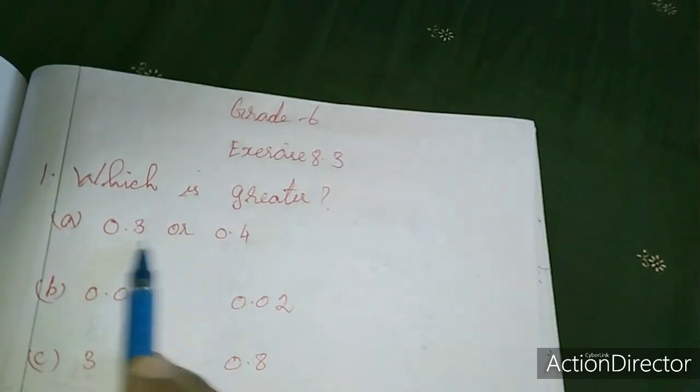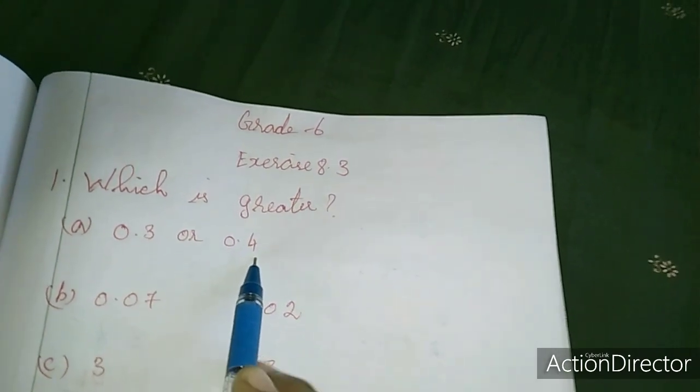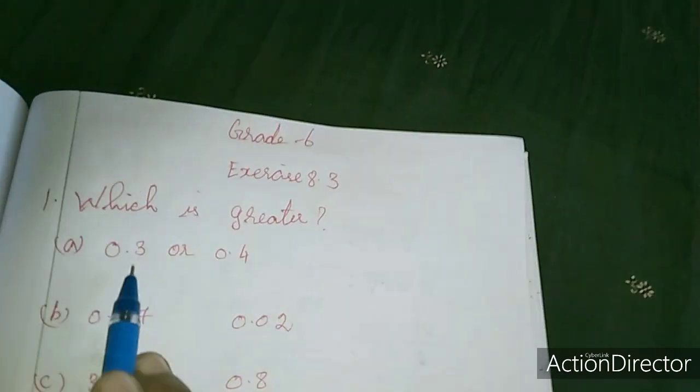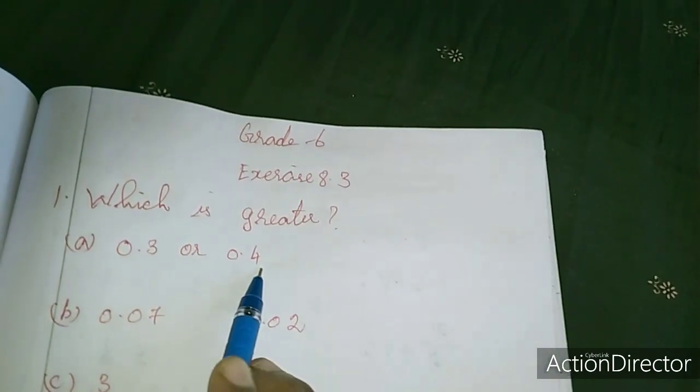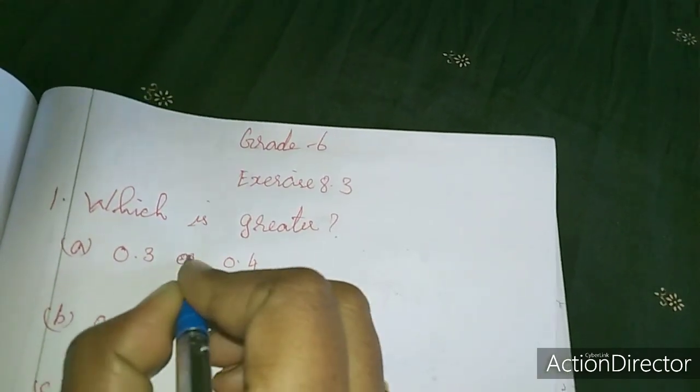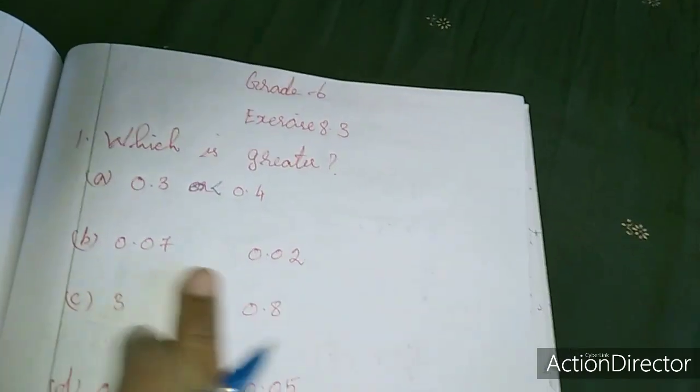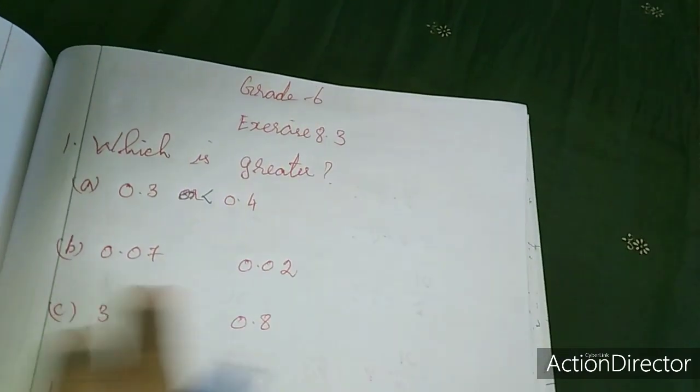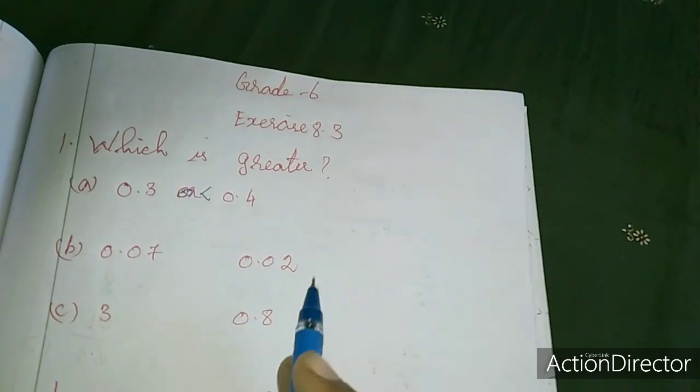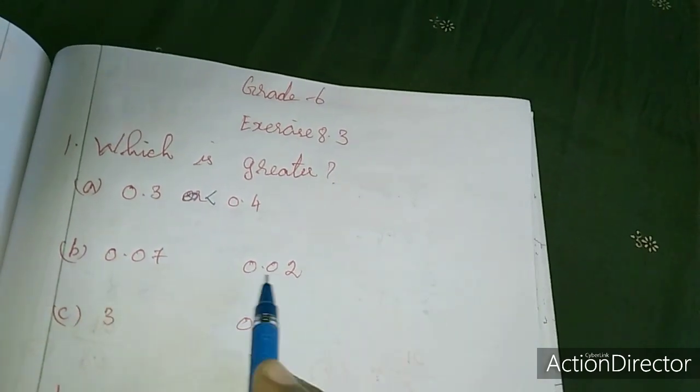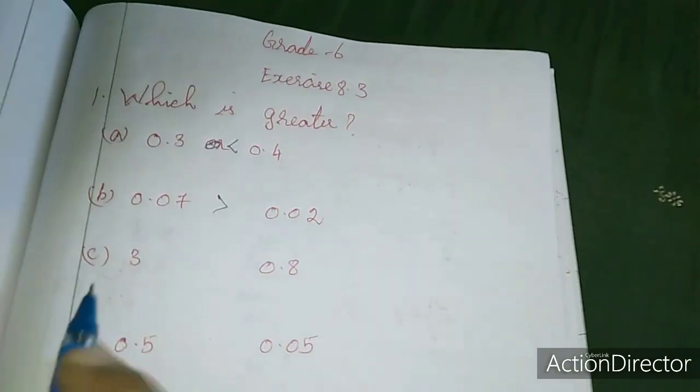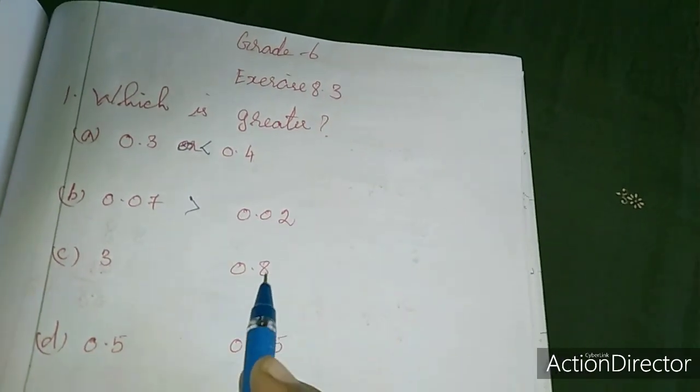So this is greater. Here are two digits and here are two digits. Compare 0.07 and 0.02. We know this is the greater. Here is 3 and here is 0.8. This is the whole number. The point is smaller, so this is greater.